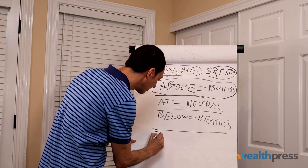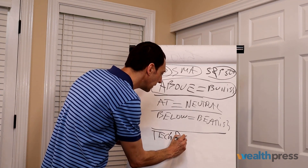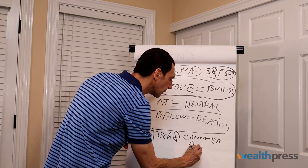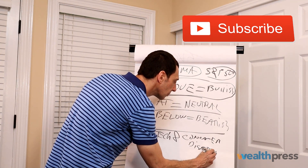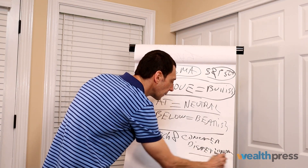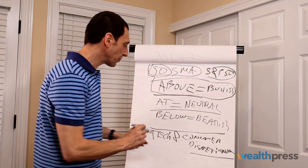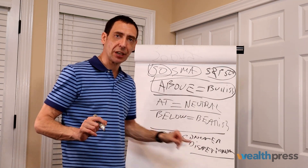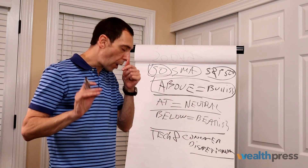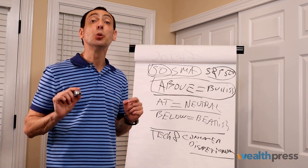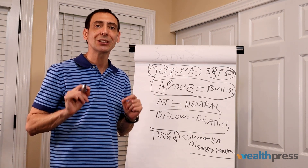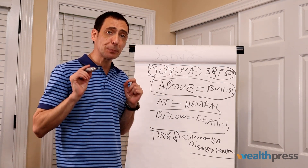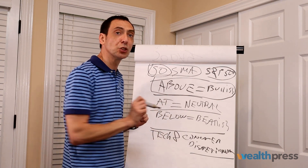One is tech, and the second is consumer discretionary. Tech and consumer discretionary — those are the two sectors you want to focus on. Why? Tech and consumer discretionary are the two most speculative sectors in the S&P 500. There are 10 sectors — industrial, retail, health — but the two most speculative ones are tech and consumer discretionary.